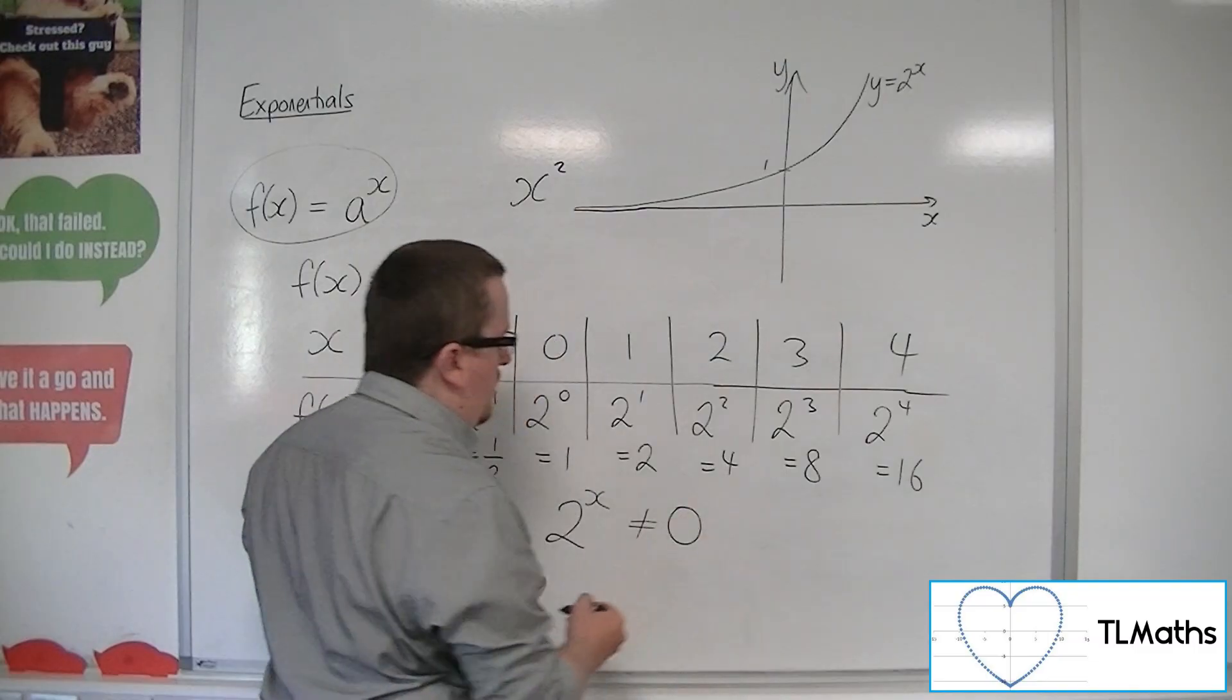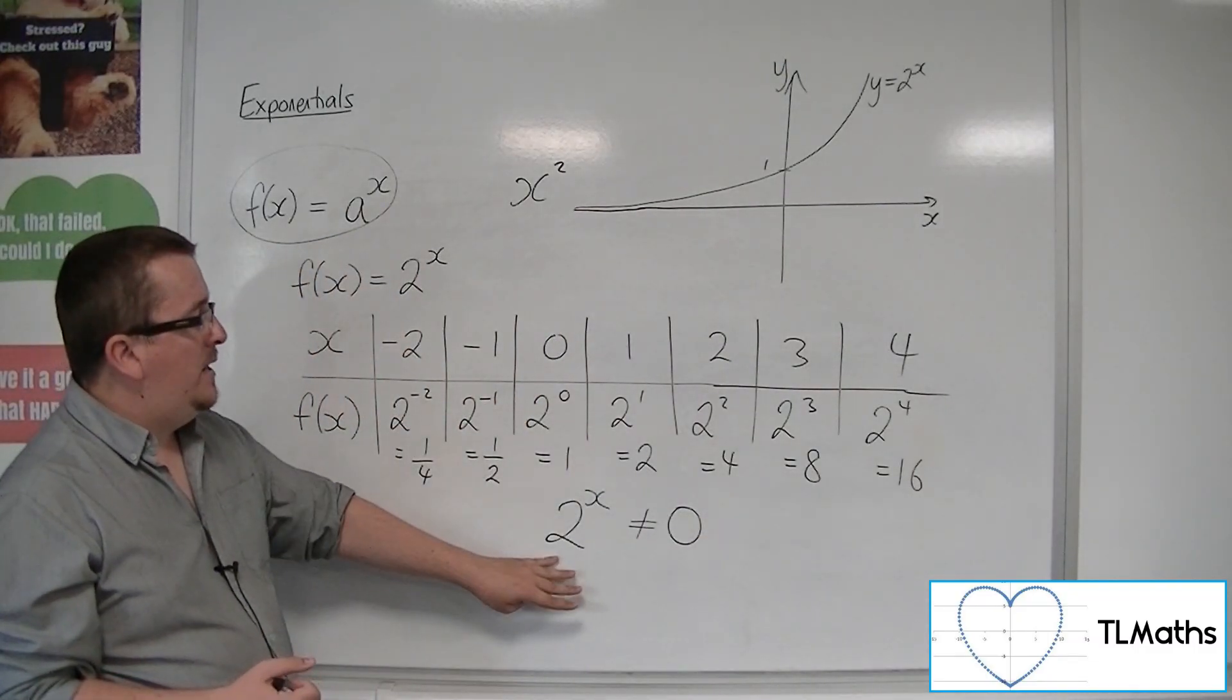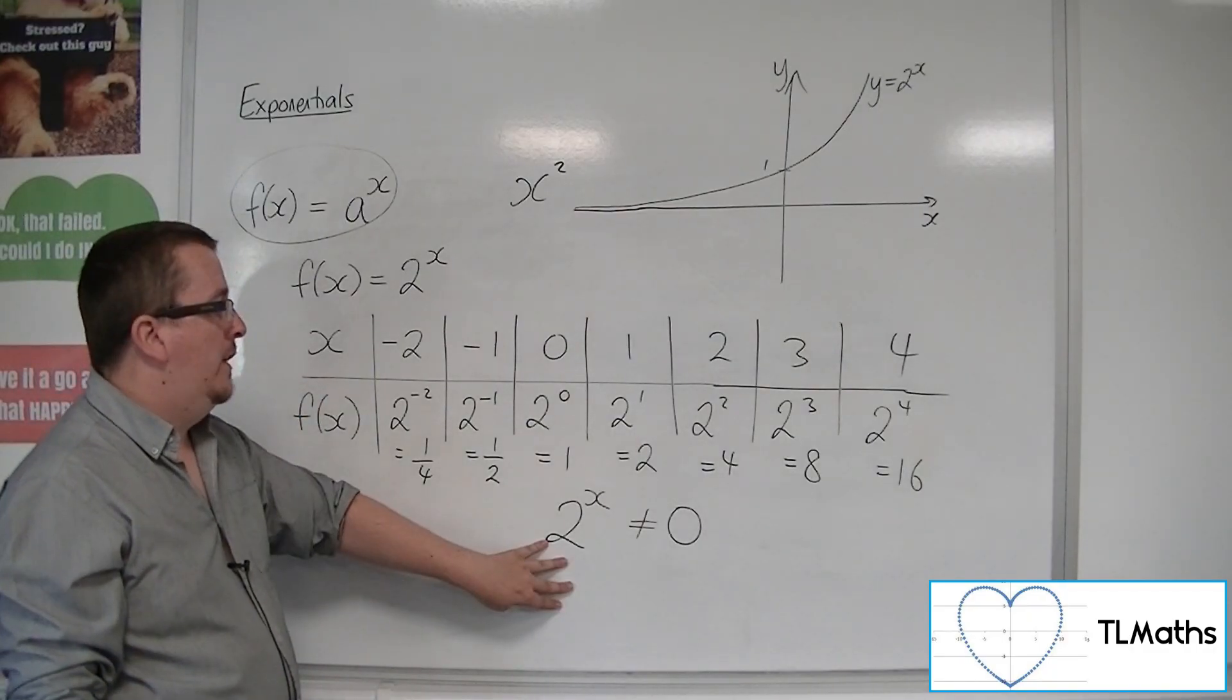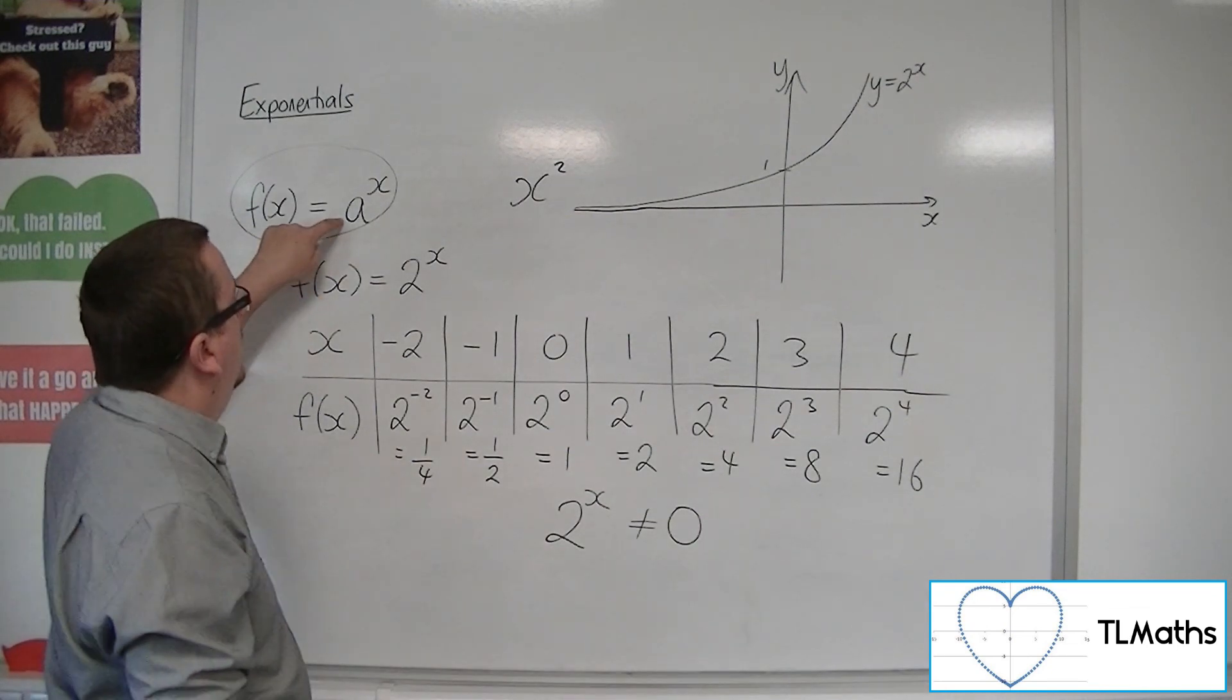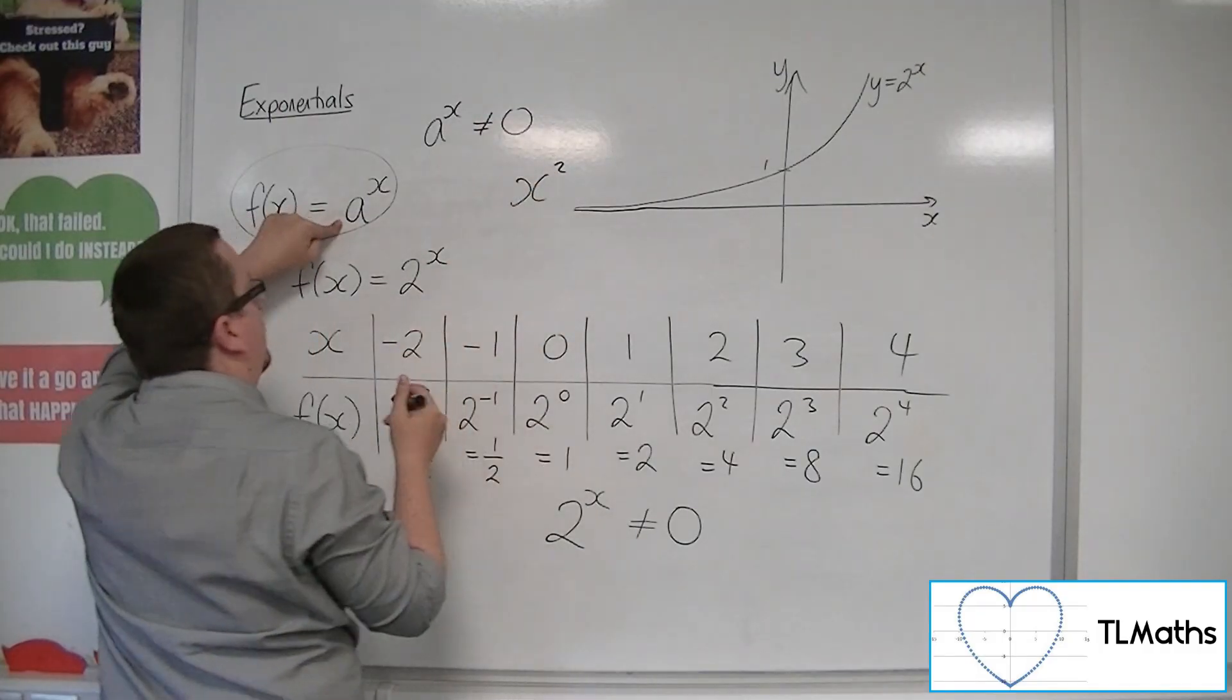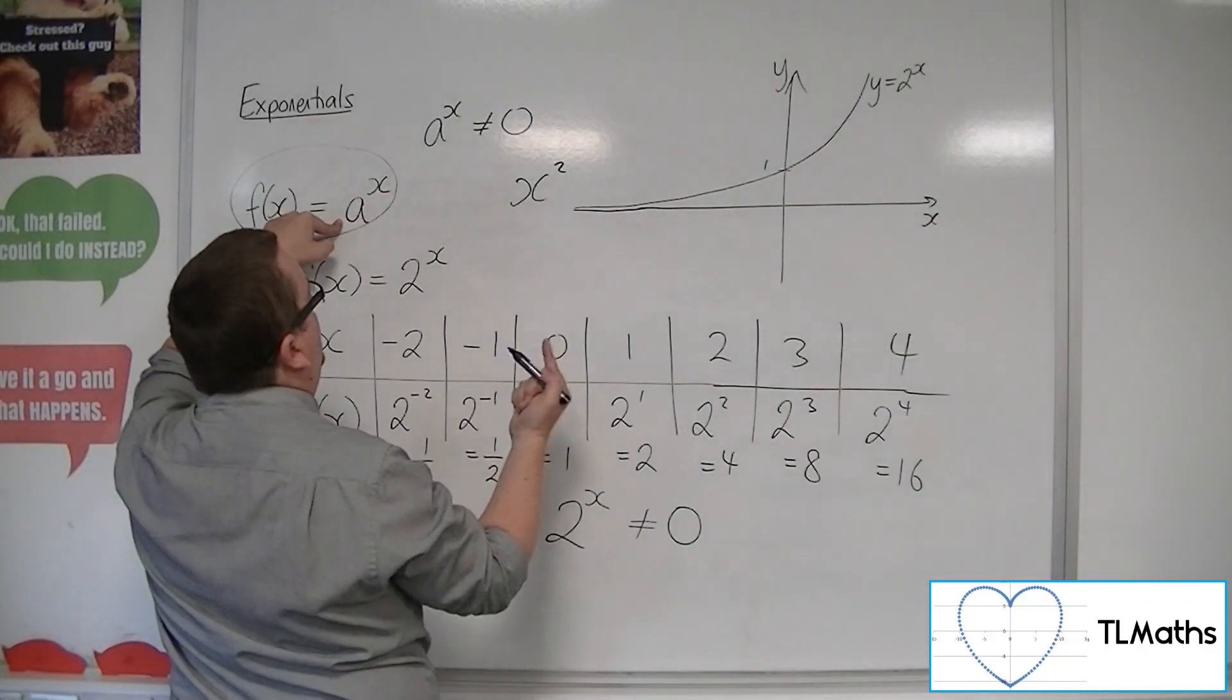So 2 to the x can never be 0 for all values of x. There is no value of x, sorry, that will get you 0 for that function. And it's the same for a to the x. So a to the x cannot be 0, unless a itself is 0.